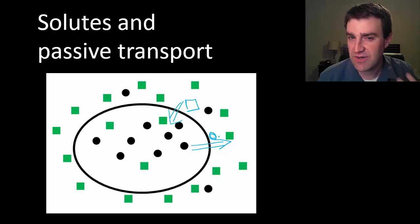And so again, the green squares don't really care what the black circles are doing and vice versa. You can just think about any particular particle's concentration and, if they can cross the membrane, they'll move from high to low concentration.